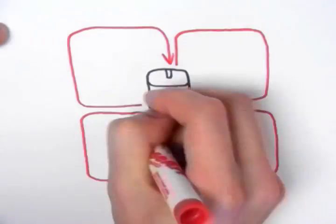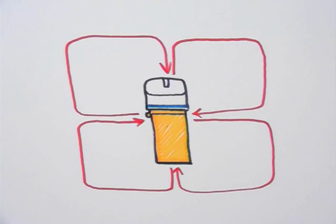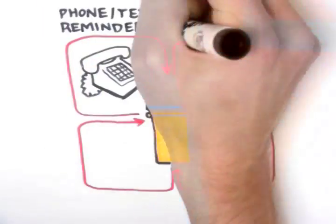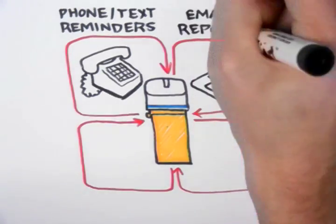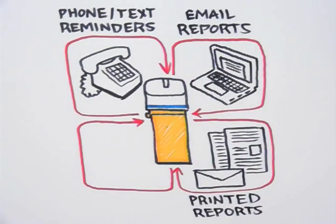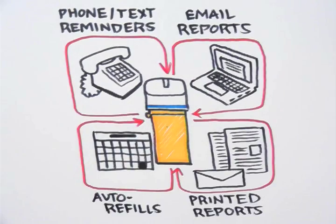They wirelessly connect to the internet, which creates four new feedback loops: phone or text reminders, email reports, printed reports, and auto refills.